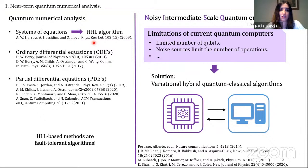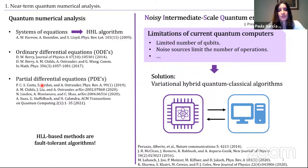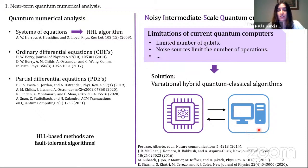The HHL algorithm can be extended to the resolution of differential equations, as they can be written in the form of a linear system. Since then, significant effort has been put into developing this technique for solving both ordinary and partial differential equations. However, HHL-based methods face a drawback: despite their theoretical quantum speedup, current NISQ device limitations in qubit count and gate number may make them infeasible. To address this within the NISQ era, we turn to variational hybrid quantum-classical algorithms.